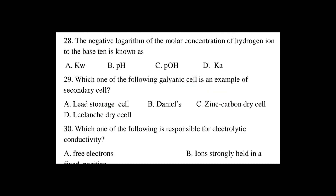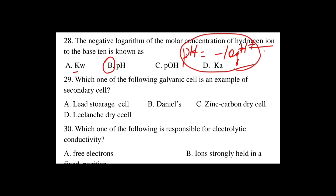Question number 28: The negative logarithm of the molar concentration of hydrogen ions to the base ten is known as A. pKa, B. pH, C. pOH, D. Ka. The answer is B — pH, which equals the negative logarithm of H+ ion concentration to base ten.